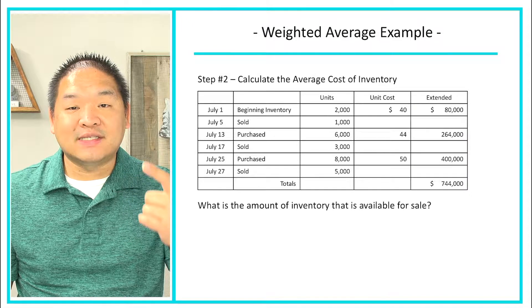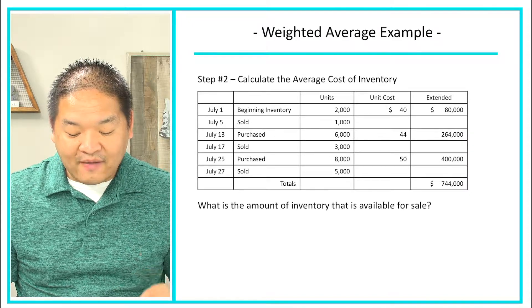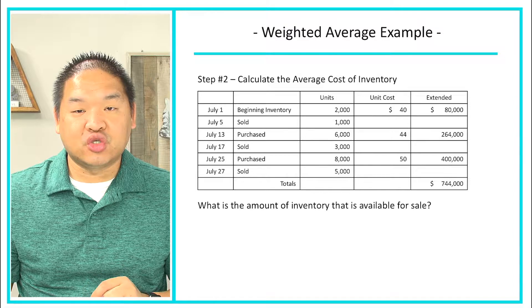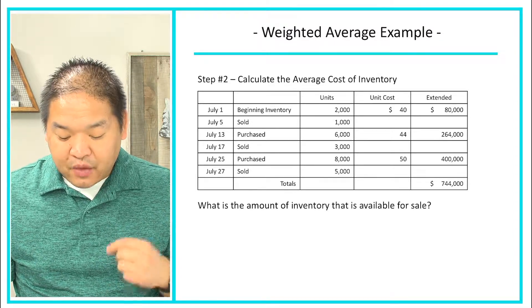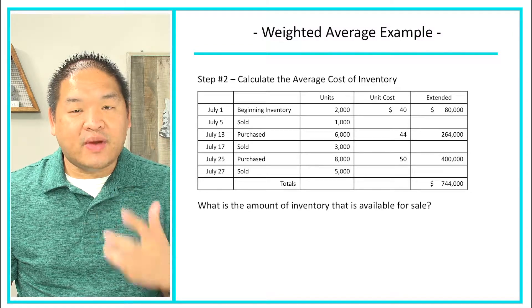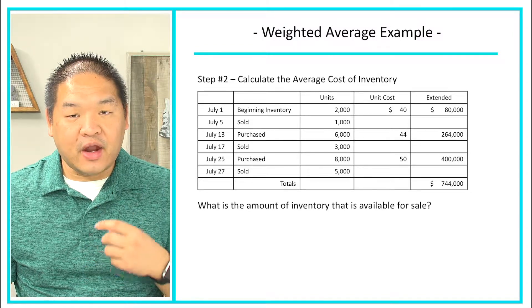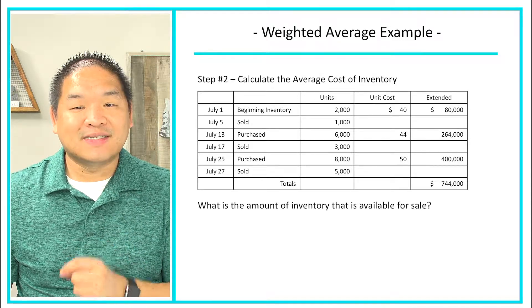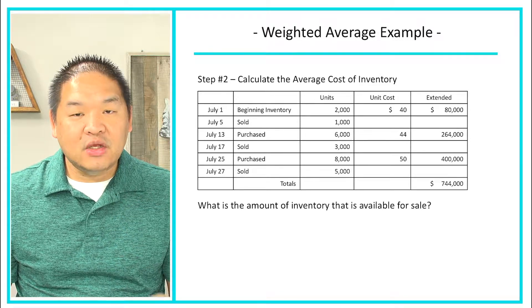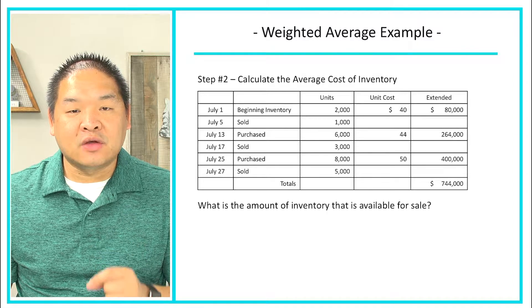Alright, moving on to step number two. We need to calculate the average cost of inventory, so the average cost of inventory because we are using the weighted average. The first question I would ask ourselves as we try to calculate our weighted average cost is, what is the amount of inventory that is available for sale? So how many units did we have available for sale during the year?